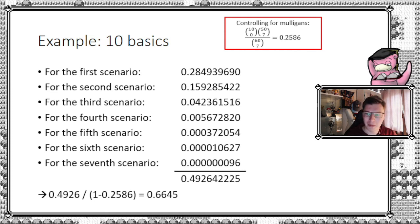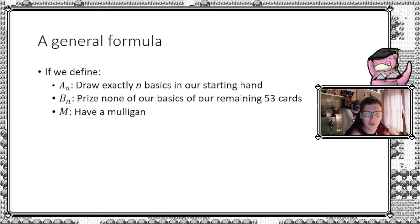You may want to think, how can we generalize this? Well, if we define the following three things: First, A_N, which means drawing exactly n basics in our starting hand. B_N, which is that we price none of our basics of our remaining 53 cards. Why 53? Because we already drew the first seven in our starting hand. And finally M for having a Mulligan.